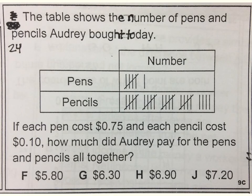Number twenty-four. The table shows the number of pens and pencils Audrey bought today. If each pen costs seventy-five cents and each pencil costs ten cents, how much did Audrey pay for the pens and pencils all together?